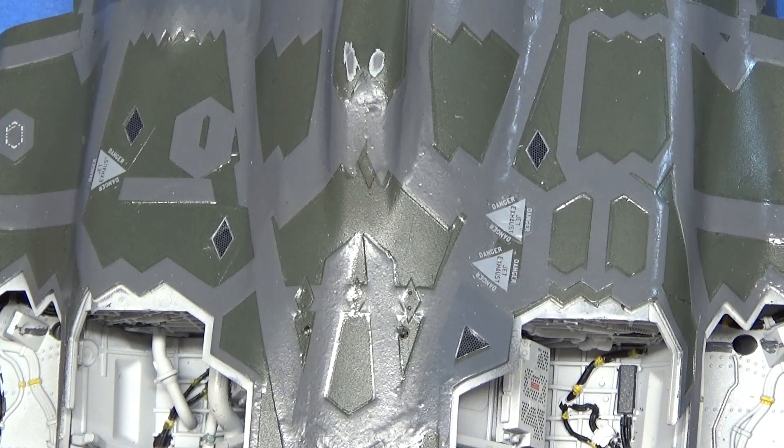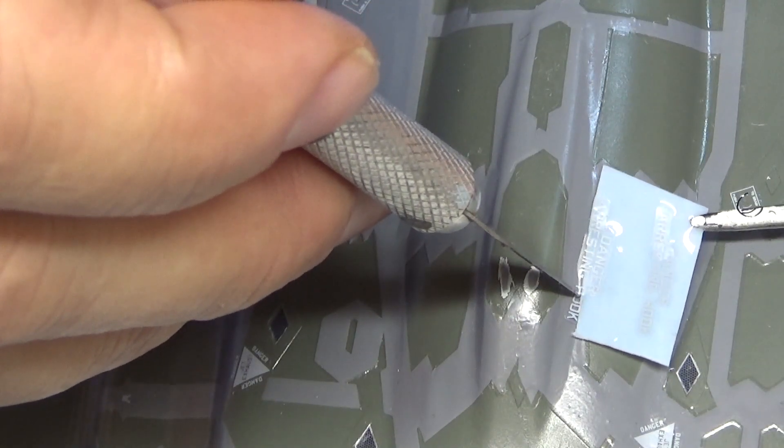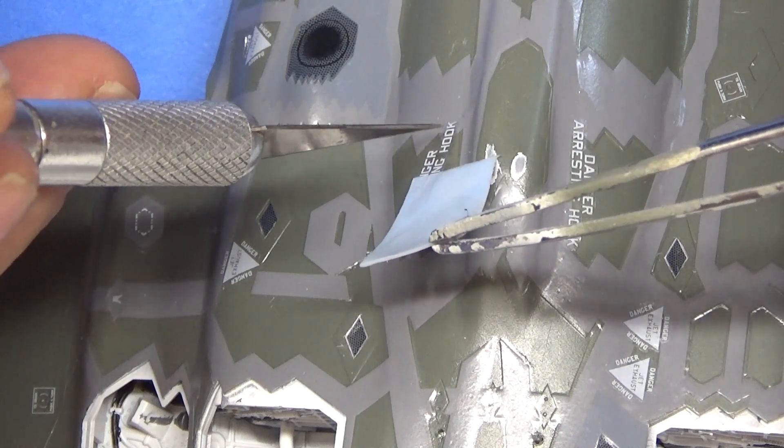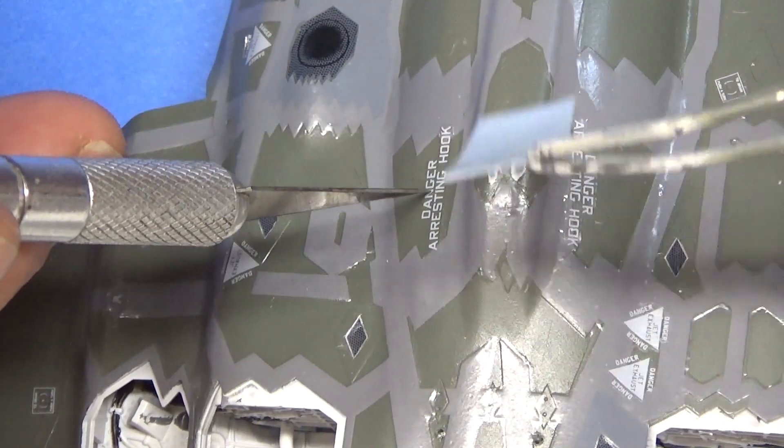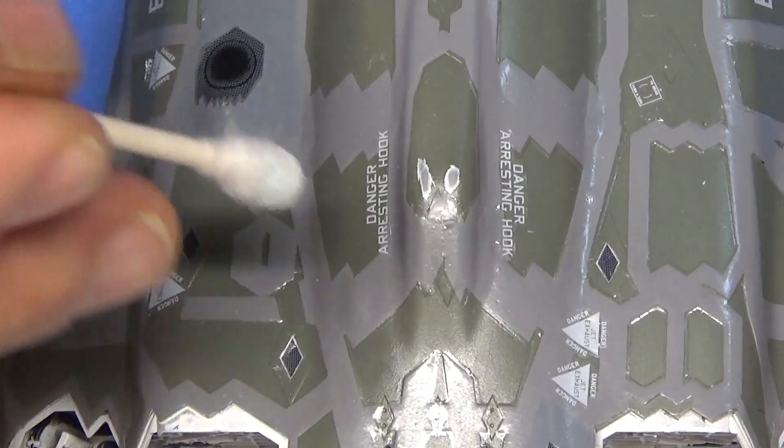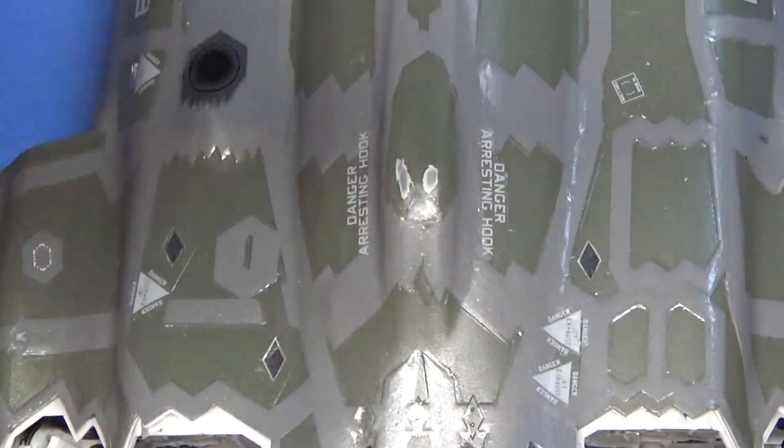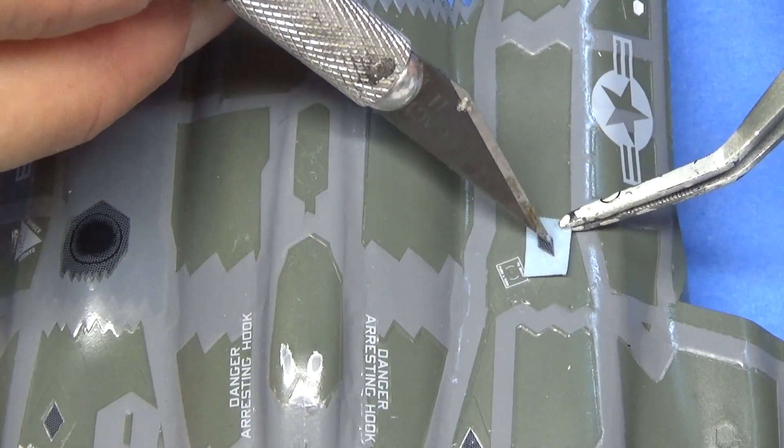You see the model's coming along nicely. And there's where I accidentally rubbed a hole in the paint. Not a big deal. It will get fixed. And you have your arresting hook when it has one. For aircraft carrier landings, of course.